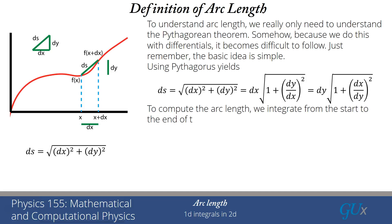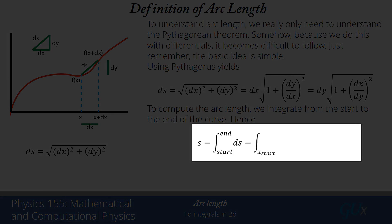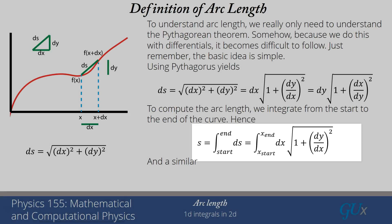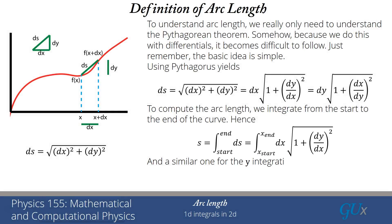So let's put this together to compute the actual arc length. What we want to do is integrate from the start to the end of the curve — simply integrating ds. If I convert to the x coordinate, I start from my x starting point, end at my x ending point, and integrate ds, which is dx times the square root of 1 plus (dy/dx) quantity squared. There'll be a similar formula for the y integration.